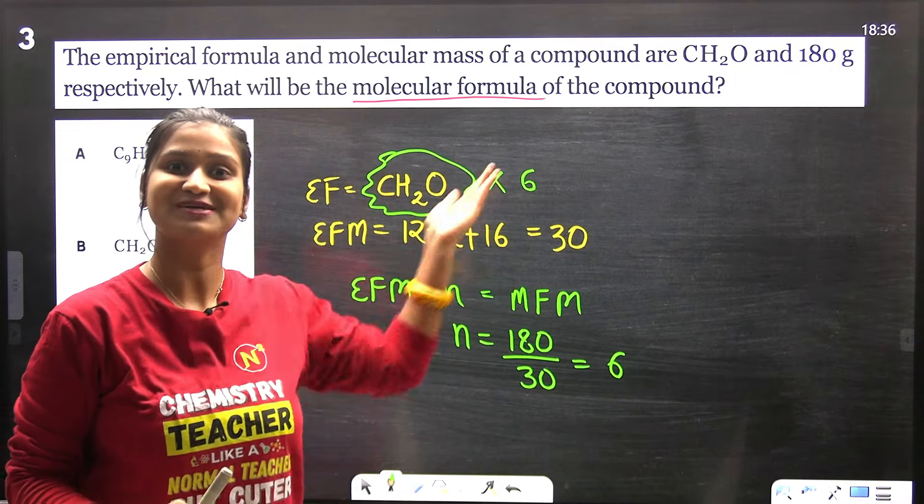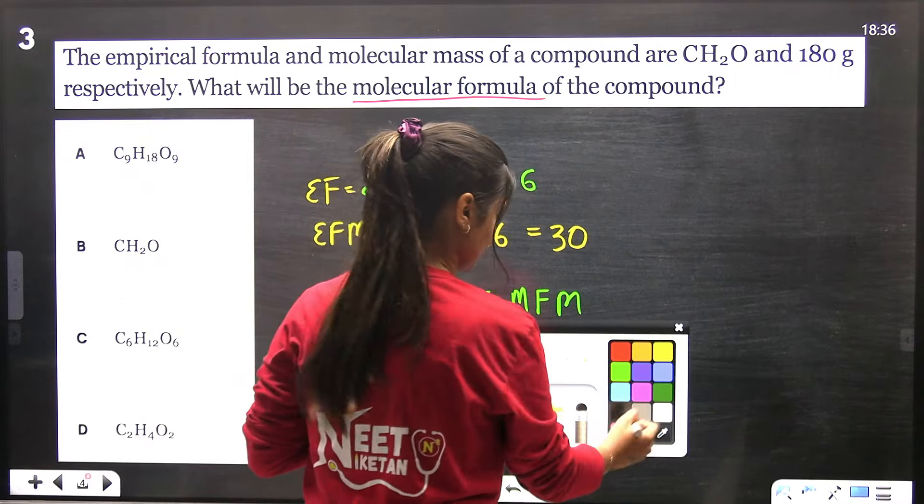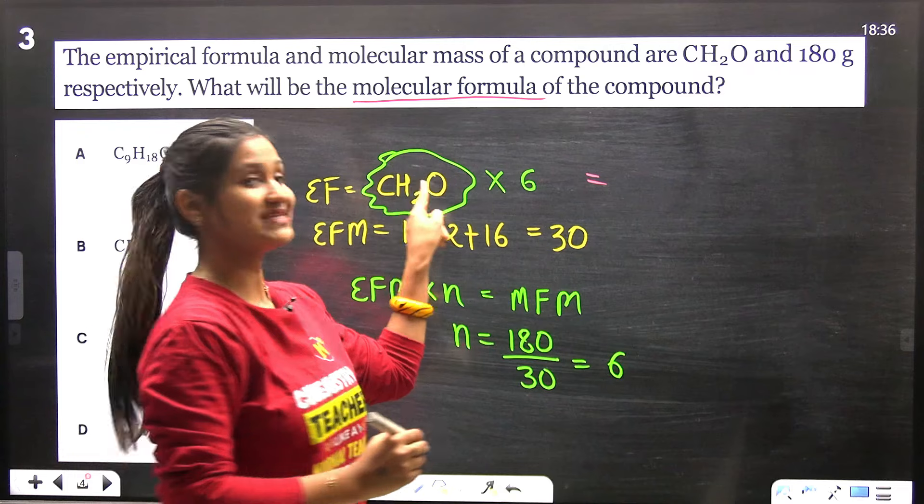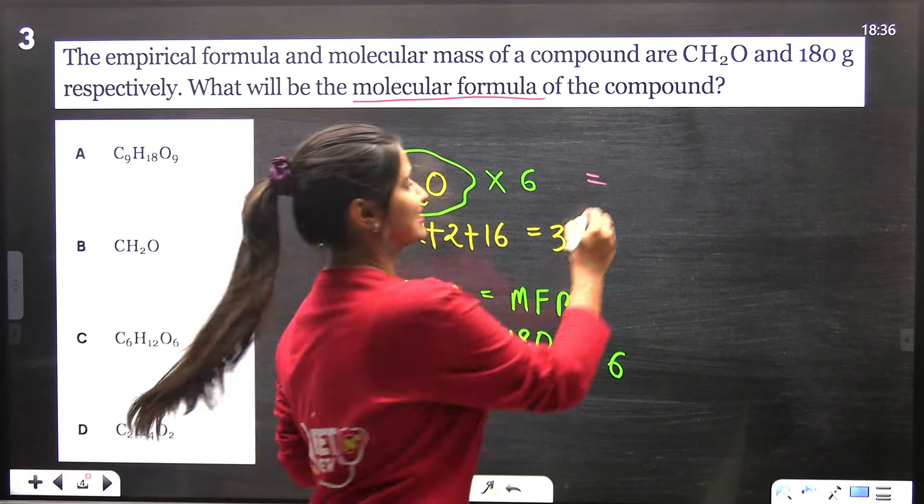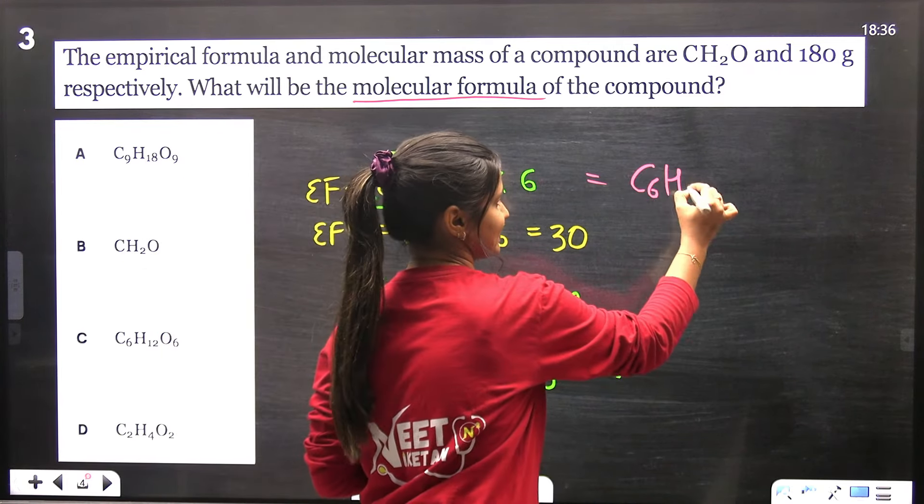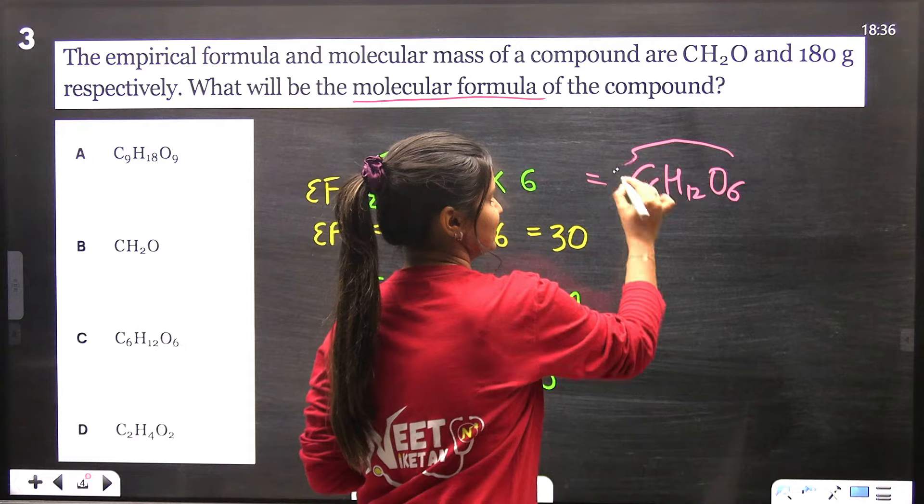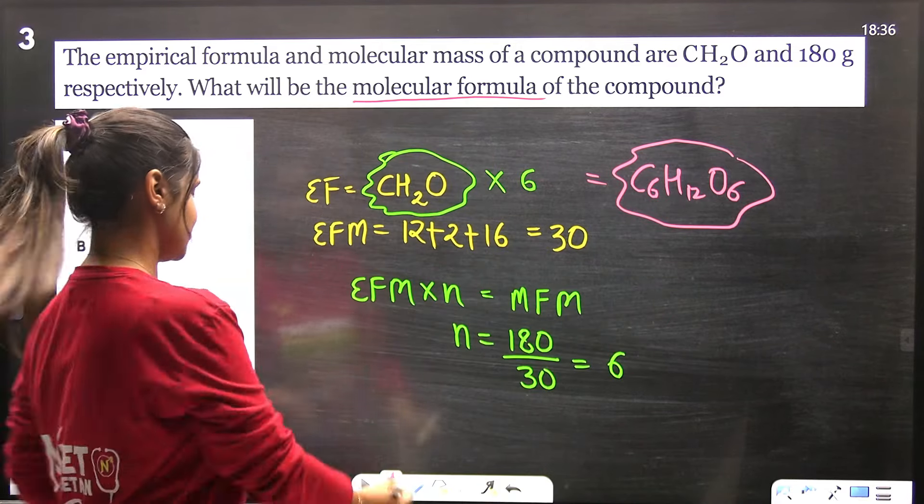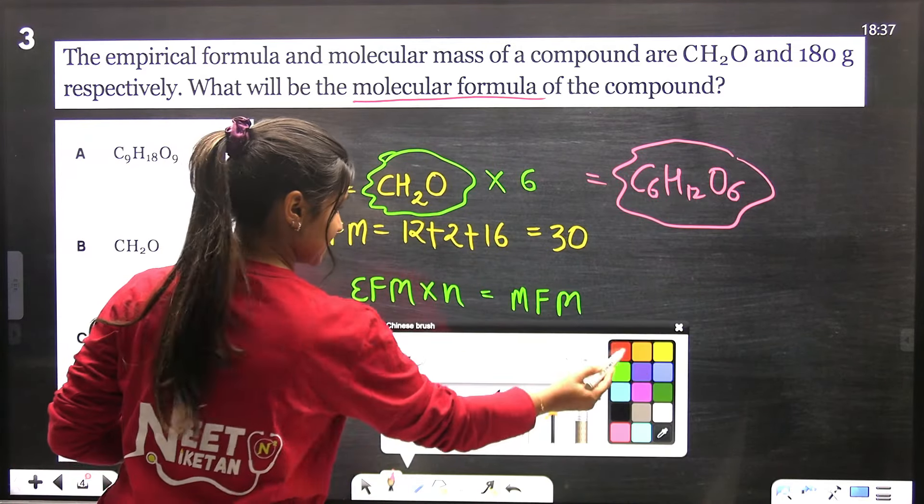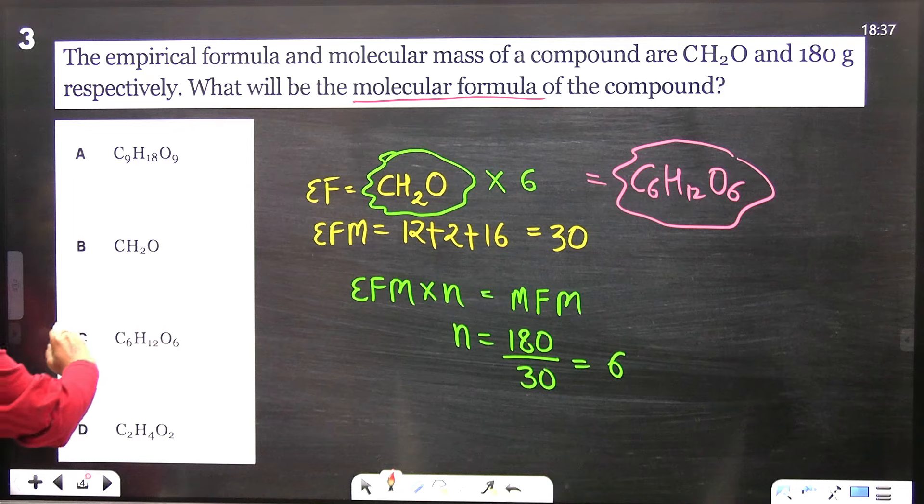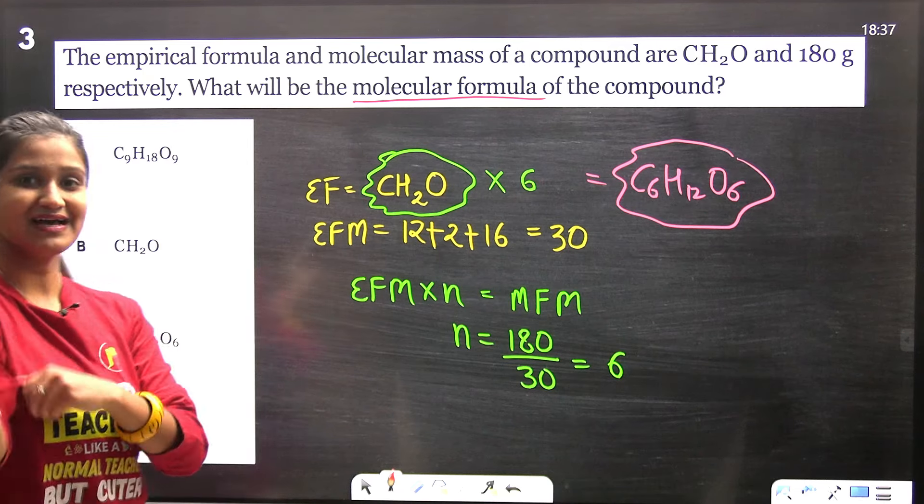Now if we know the empirical formula and multiply it by N, we have the molecular formula, which will be C6H12O6, that is glucose. So this is our right choice, which is option number C.